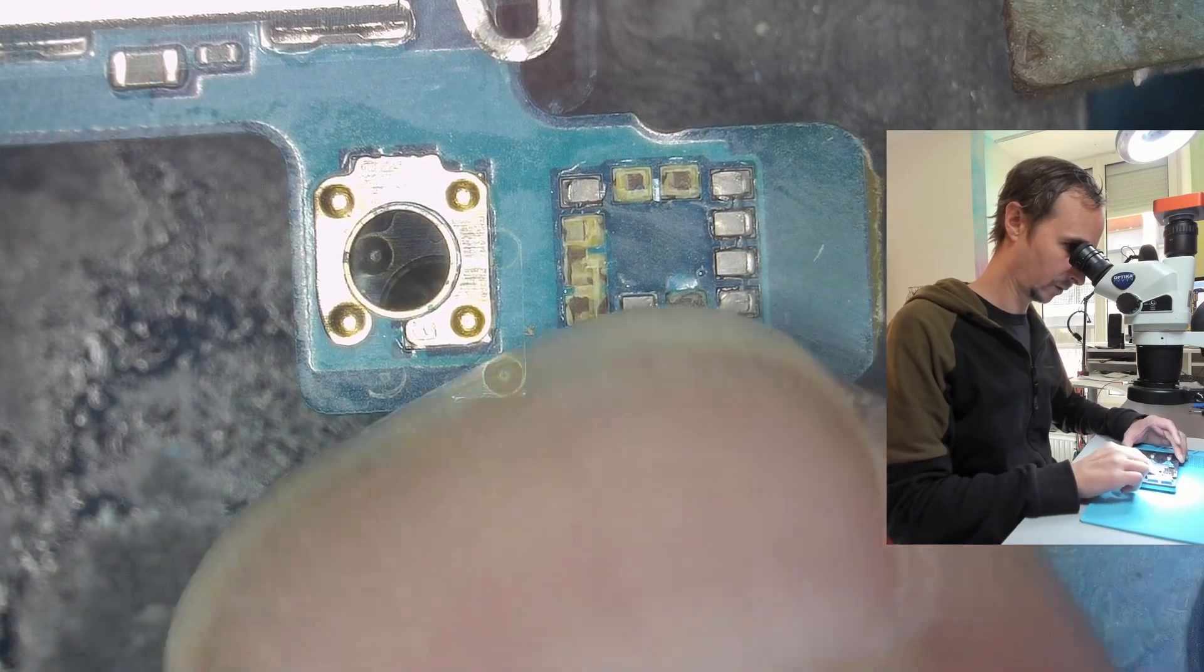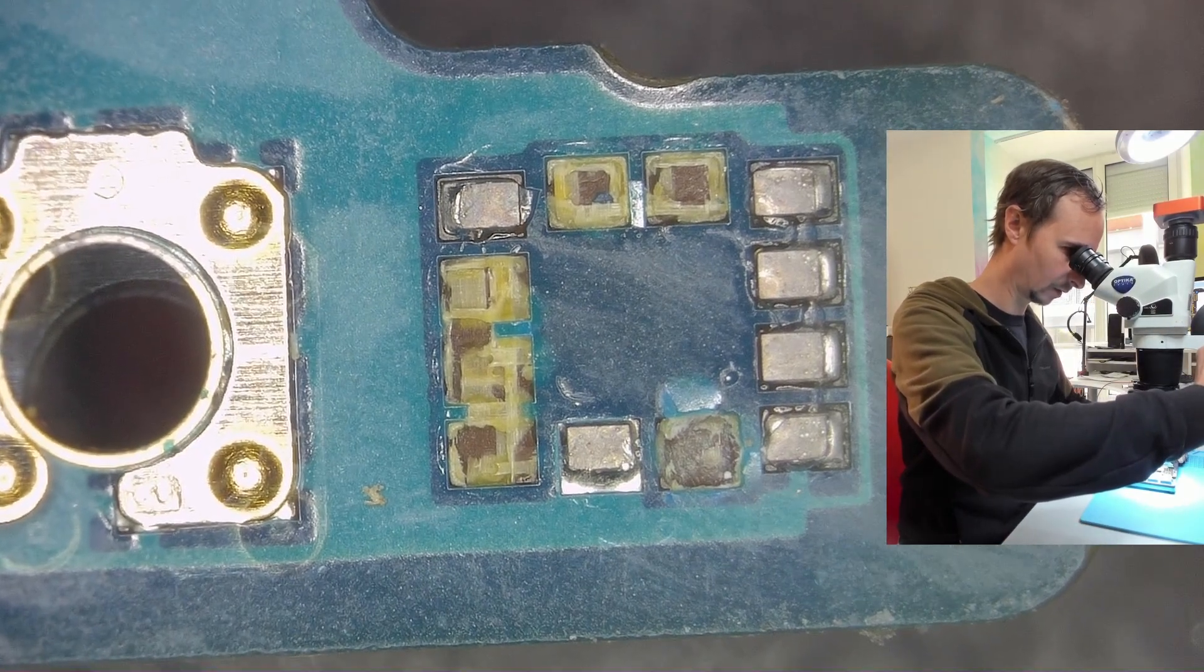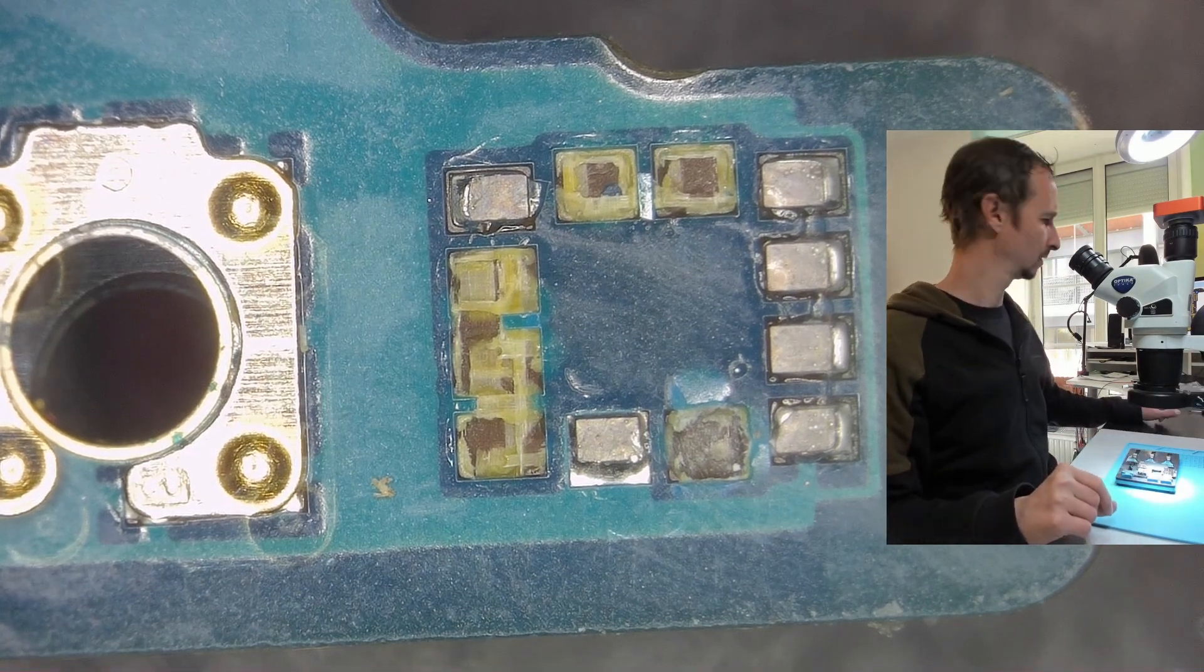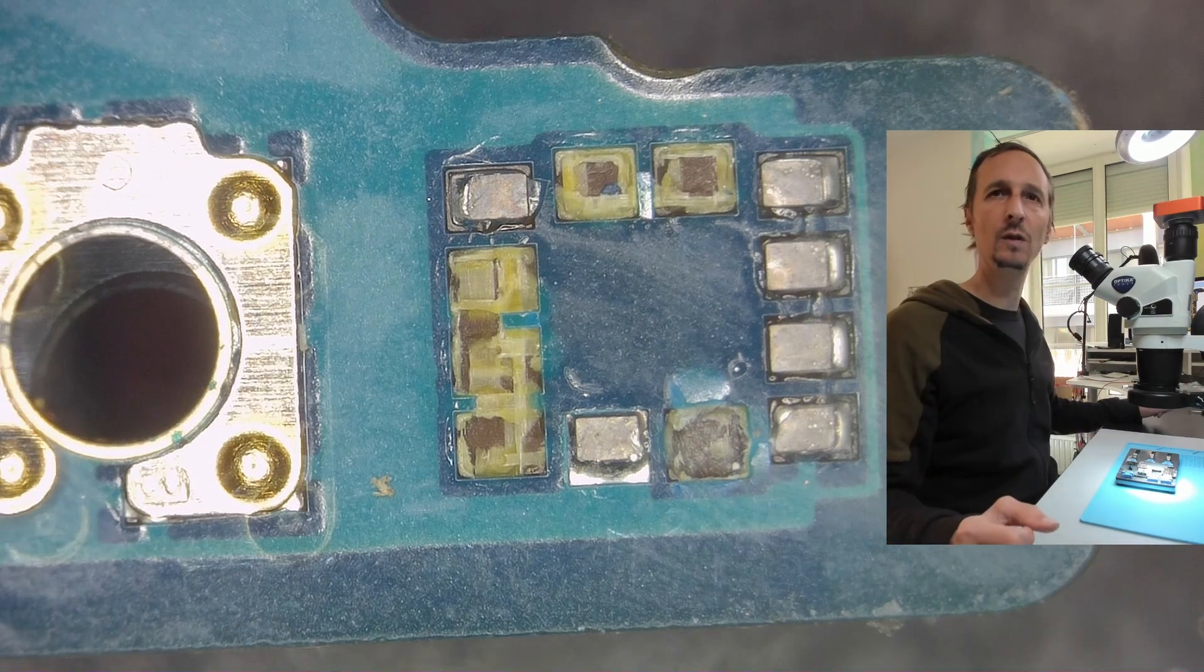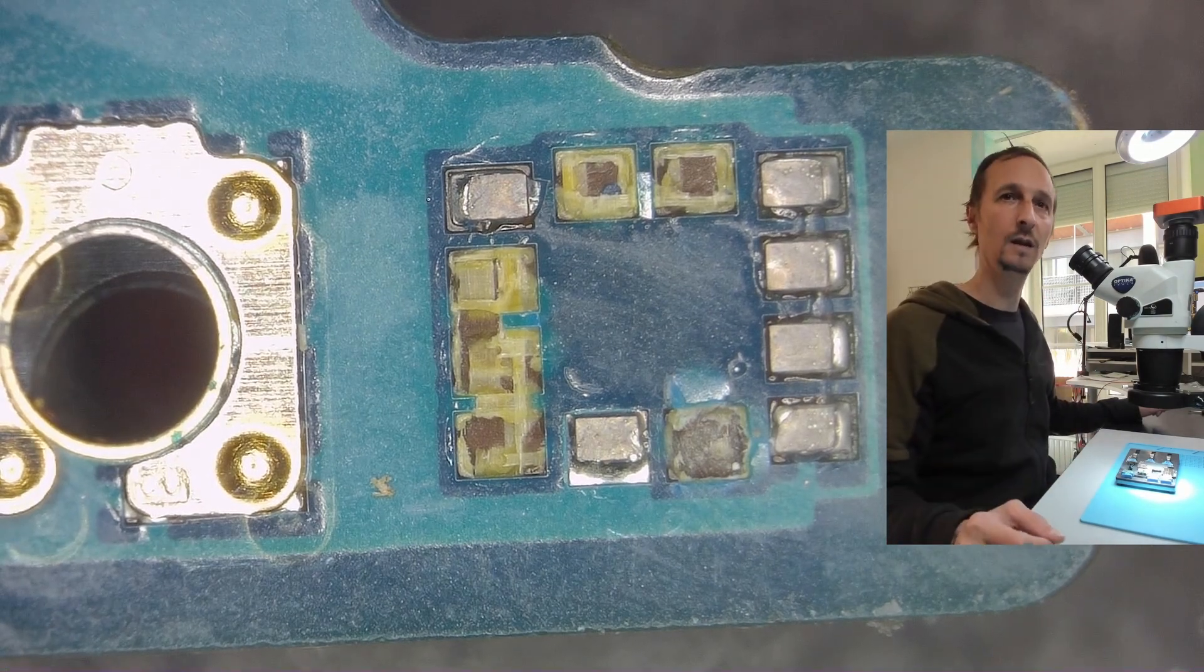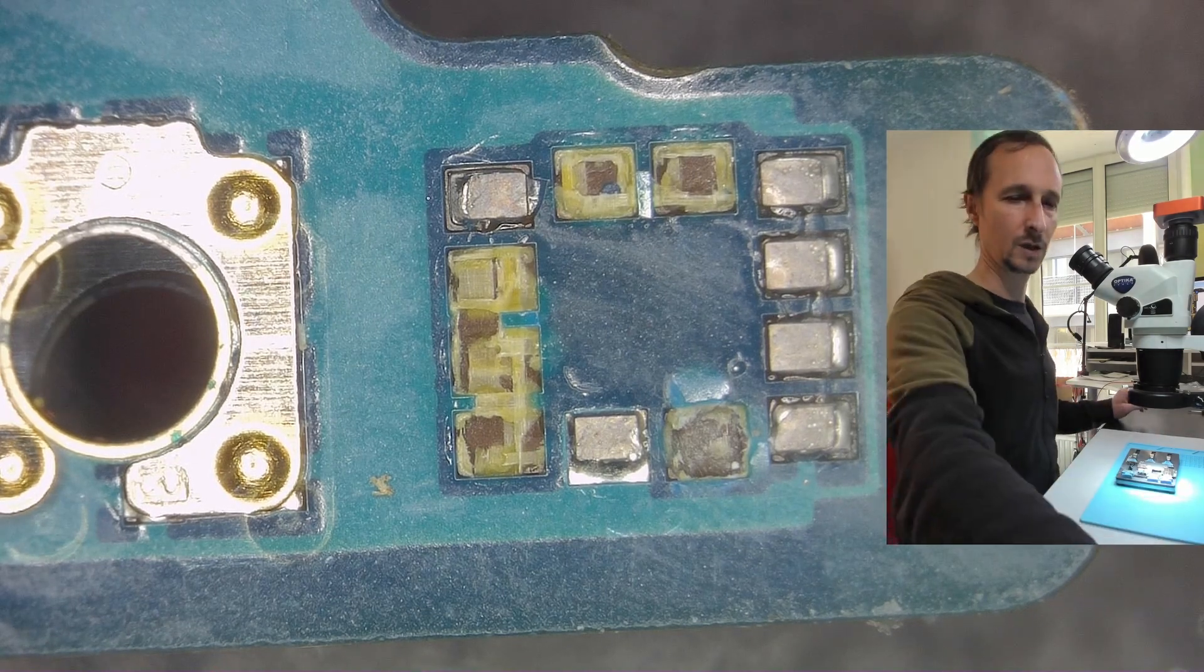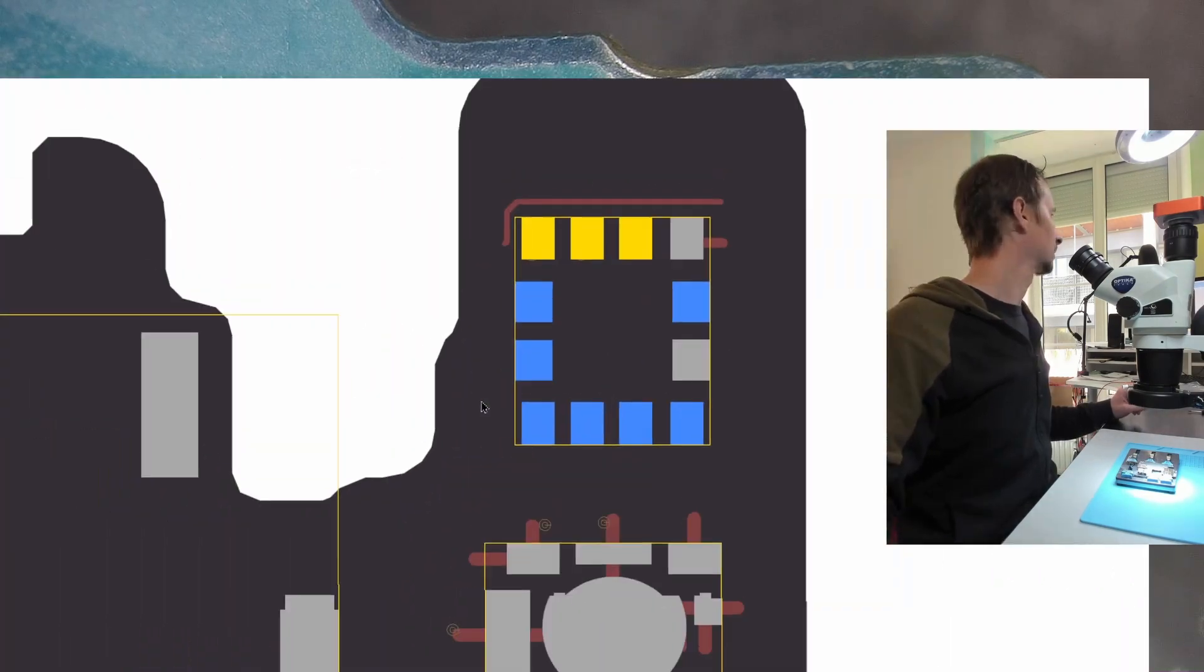We have one, two, three, four, five, six missing pads, but they do not look like you have a connection. Sometimes you have a pin in the center, small dot where there's a trace coming through, but that's not the case here. So we should be lucky. And we also have a board view, which is better than just guessing.